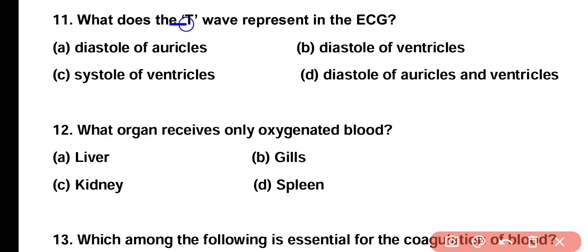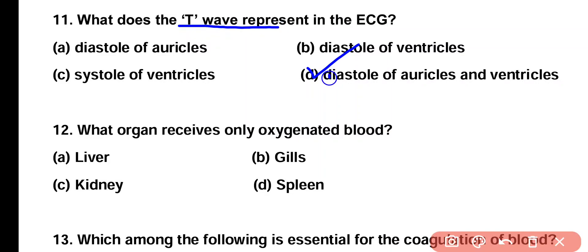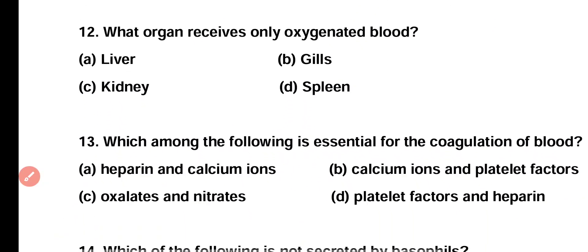Question number 11. What does the T wave represent in ECG? Diastole of auricle, diastole of ventricle, systole of ventricle, or diastole of auricle and ventricle? Correct answer is option D. In ECG the T wave represents repolarization of ventricle, that is diastole of auricle and ventricle.